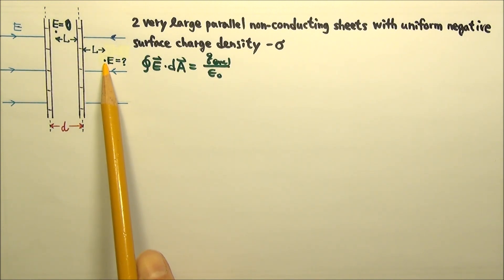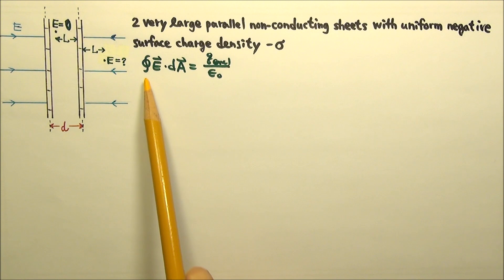To find the field out here, we can use Gauss's law. The closed integral of E dot dA equals to Q enclosed over epsilon naught.